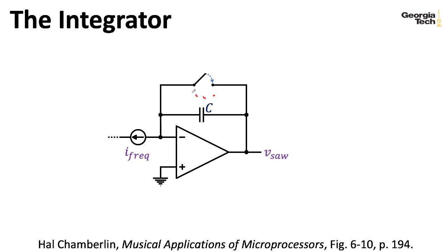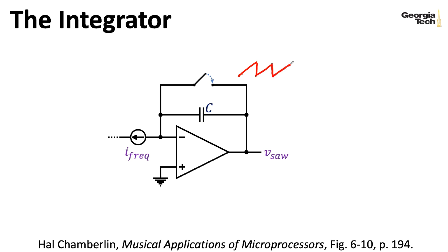We'll need some sort of magic switch. As long as the switch is open, our sawtooth is able to go up. But when we reset, the switch will close — it's going to short the output to the virtual ground, at which point it resets down to zero and we drain the cap. So we need something that's an electronic switch.